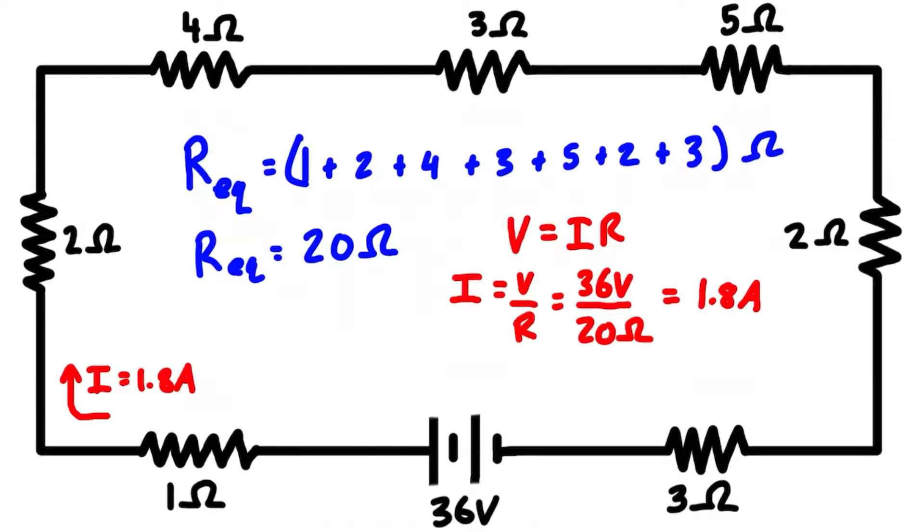The total voltage drop across the equivalent resistor would be equal to the voltage supplied by the battery, so that would be 36 volts over the equivalent resistance which is 20 ohms, and that division just gives us 1.8 amps.